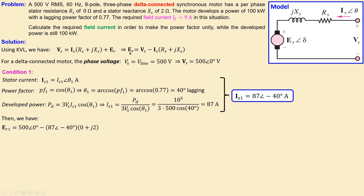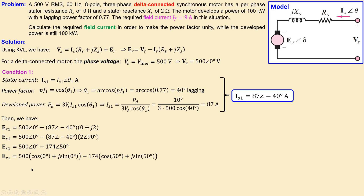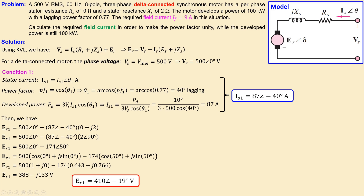Using the back EMF formula and substituting the stator current along with the resistance of zero and reactance of 2 ohms, we get the expression for back EMF. Converting to polar representation to simplify the multiplication, we convert both terms to rectangular form and add them. After several steps, the result converts to a polar representation of 410 volts with a phase orientation of minus 90 degrees. That is our back EMF for condition one.